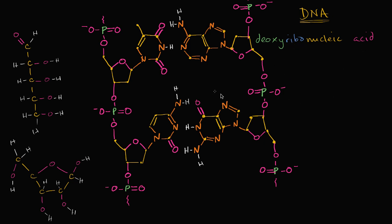DNA is just a general term for nucleic acid, and the term nucleic comes from the fact that it's found in the nucleus of eukaryotes. That's where the nucleic comes from. And we'll talk about in a second why it's called an acid. Each DNA molecule is made up of a chain of what we call nucleotides.